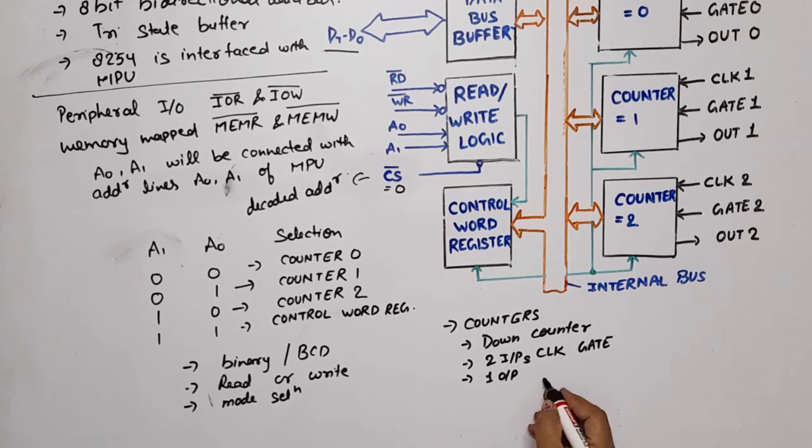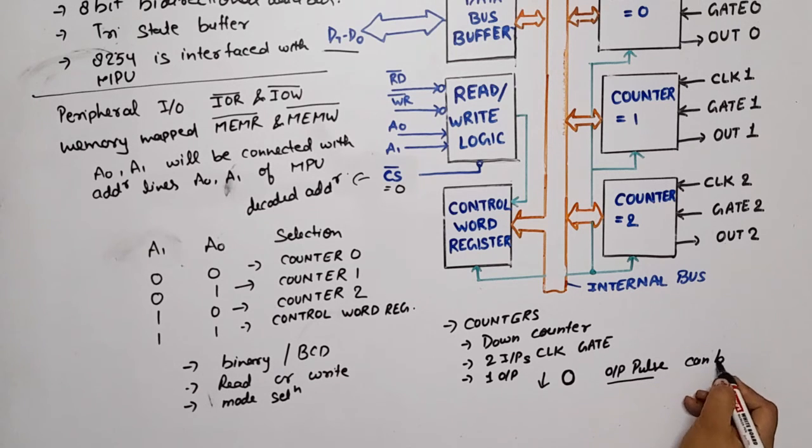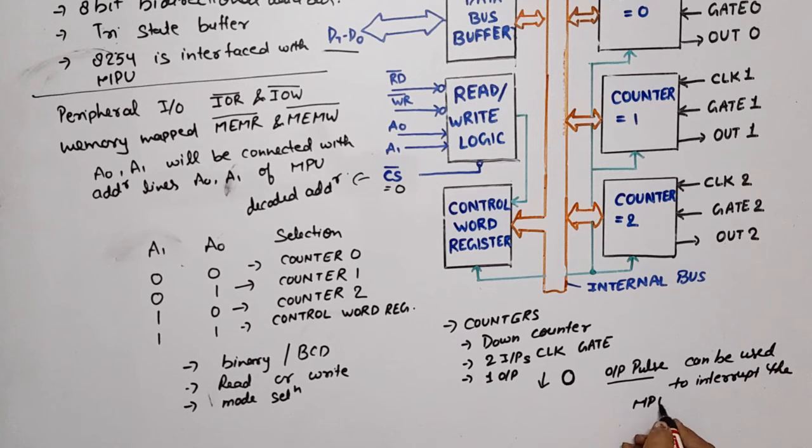And after enabling 8254, the counter will start decrement. When it will decrement until the count value is 0, and as the count value is 0, these counter will generate an output pulse. Output pulse generate after reaching 0, and this output pulse can be used to interrupt the MPU.